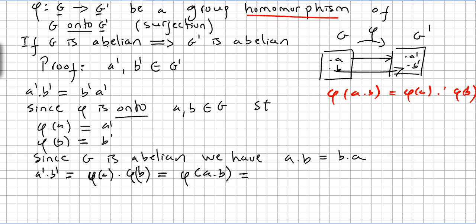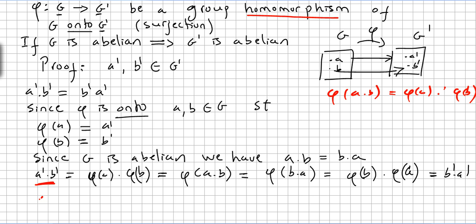But G is abelian, so phi(a · b) = phi(b · a). And since phi is a group homomorphism, phi(b · a) = phi(b) ·' phi(a). This equals b' ·' a'. Therefore a' ·' b' = b' ·' a'. Proved.